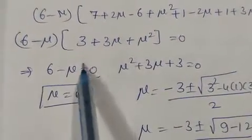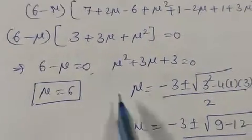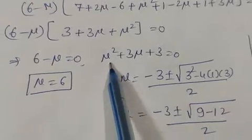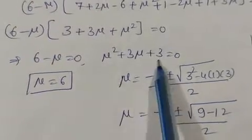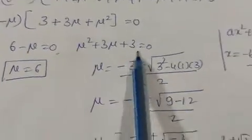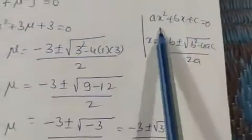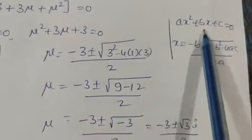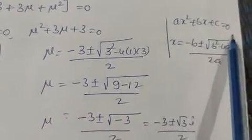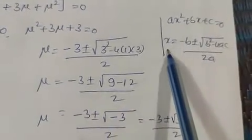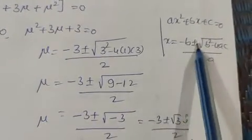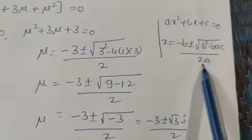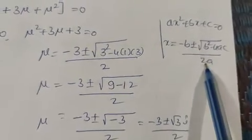From the first factor, mu equals 6. The second factor mu² plus 3mu plus 3 cannot be factorized, so we apply Sridharacharya's formula (quadratic formula): x equals [minus B plus or minus sqrt(B² minus 4AC)] divided by 2A.